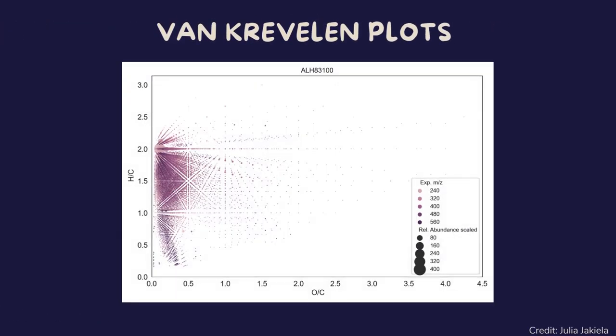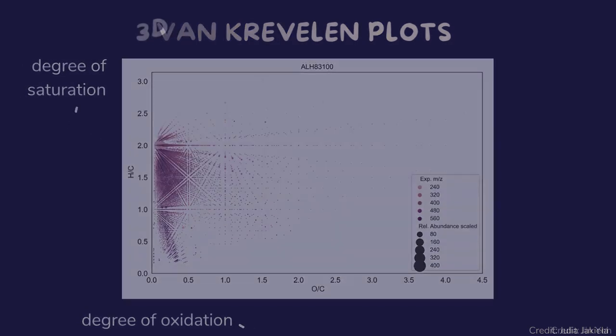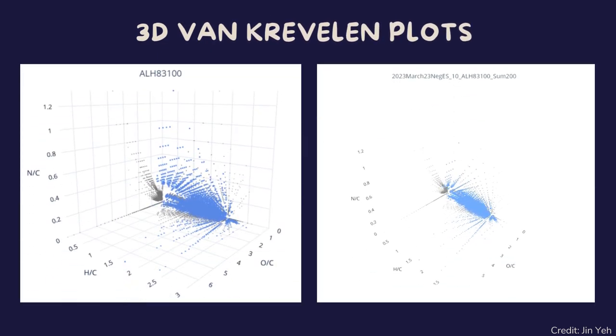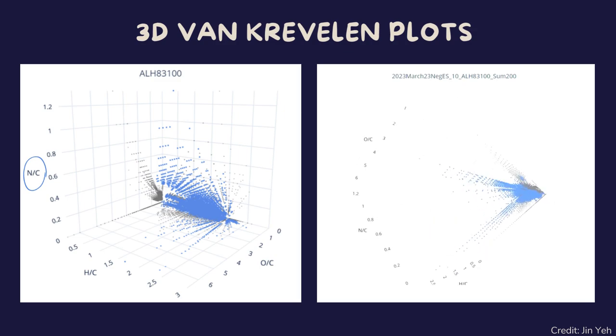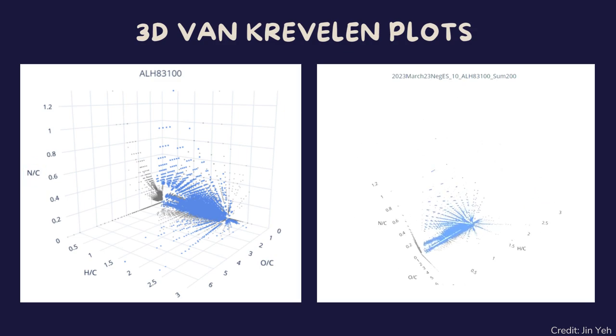Van Krevelen plots are used to assess the chemical composition by comparing elemental ratios. The oxygen-to-carbon ratio is plotted on the x-axis and indicates the degree of oxidation of the organic material. The hydrogen-to-carbon ratio on the y-axis gives information about the degree of saturation. It is possible to extend the traditional van Krevelen plots into the third dimension by adding a third axis, typically representing another elemental ratio, such as nitrogen-to-carbon or sulfur-to-carbon.